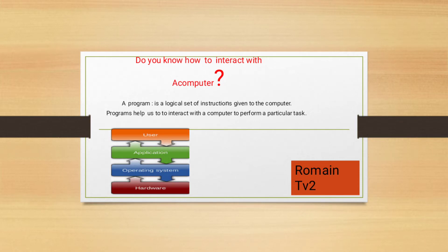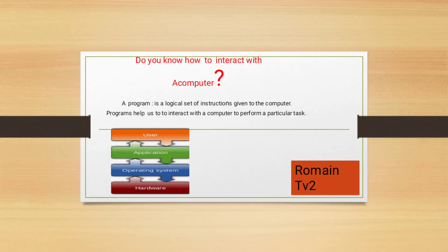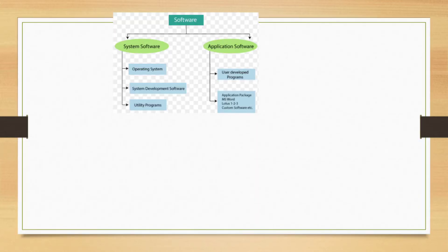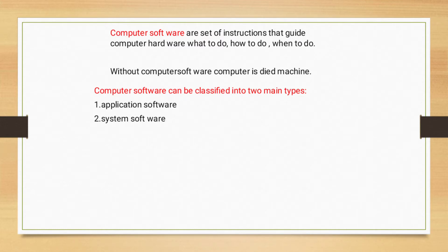Do you know how to interact with a computer? A program helps us to interact with the computer to perform a particular task. A program is a logical set of instructions given to the computer. The user interacts with the computer through the application, operating system, and hardware. Computer software is a set of instructions that tell computer hardware what to do, how to do it, and when to do it.